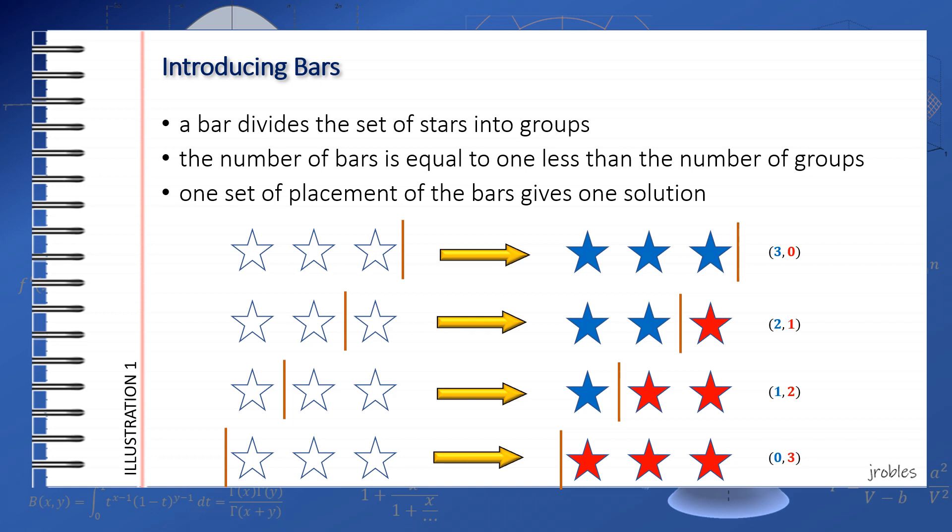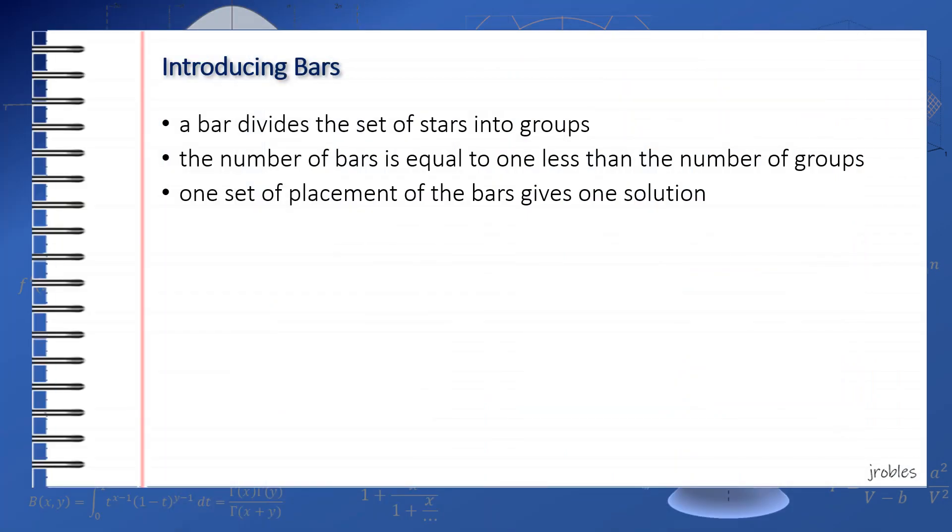To further illustrate the use of bars, let's consider an upgrade of the problem. Let's say we're still looking for 3 stars, but this time we have 3 possible colors: red, blue, and green. Since we want to divide the 3 stars into 3 groups, we need 3-1 or 2 bars. Let's say we place the first bar between the first and second star, and then the second bar between the second and third star. Again, without loss of generality, let's consider the leftmost group as the blue stars, then the middle group as red, and the rightmost as green.